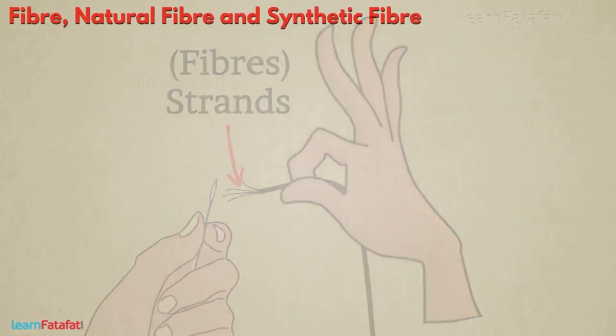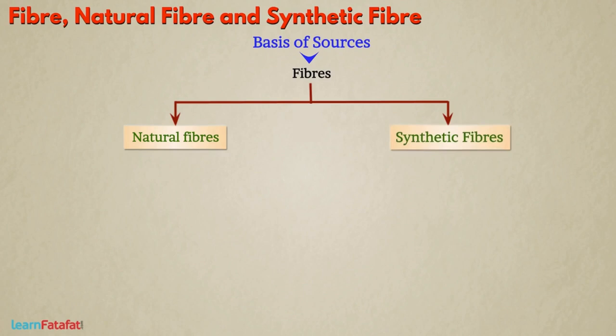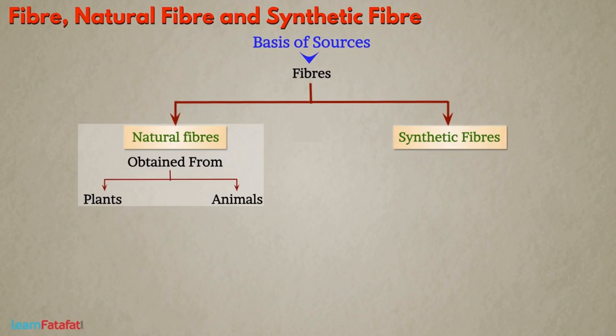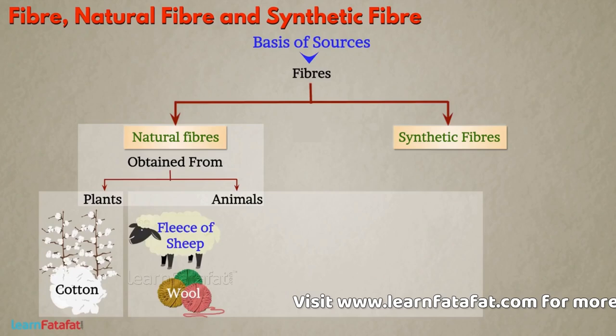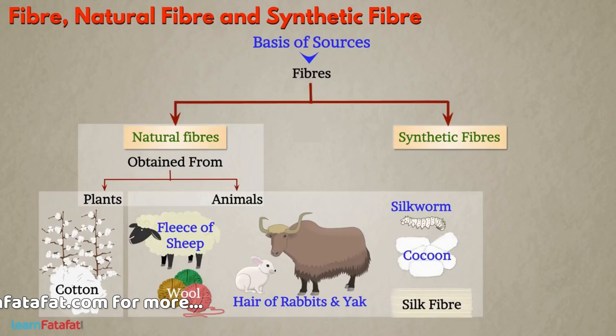On the basis of source, fibers are of two types: natural fibers and synthetic fibers. Natural fibers are obtained from plants or animals. For example, cotton is obtained from plants, wool is obtained from the fleece of sheep, hair of rabbit and yak. The cocoon of silkworm gives us silk fiber.